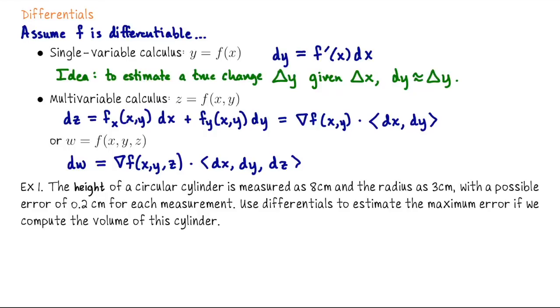First, identify the function. Here it's the volume function, a scalar-valued function of two inputs r and h: V(r,h) = πr²h.